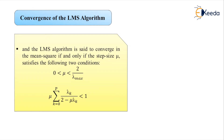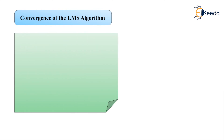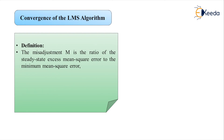Concerning the excess mean square error, one important parameter is the misadjustment, denoted M. It is the ratio of the steady-state excess mean square error to the minimum mean square error: M = zeta_ex(infinity) / zeta_min. This concludes the topic of convergence of the LMS algorithm. The next video will discuss a popular variant for practical applications of adaptive filters: the normalized LMS algorithm.